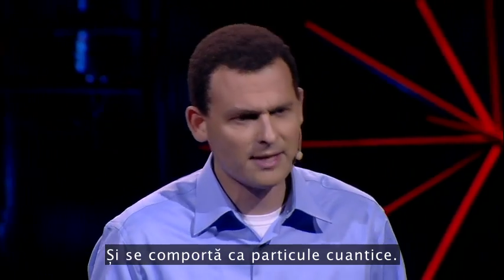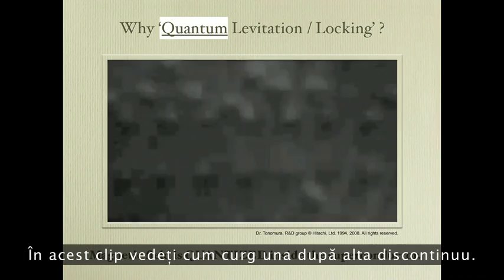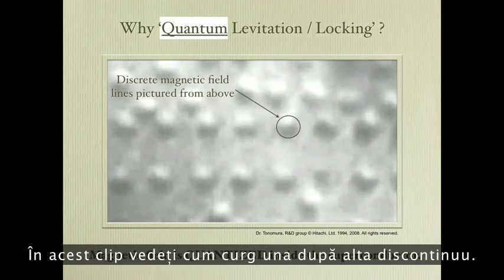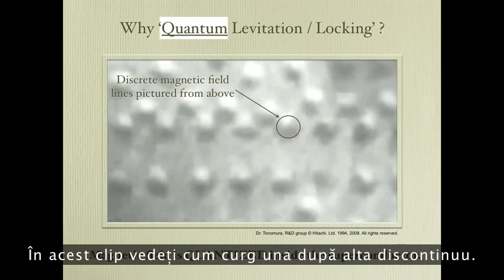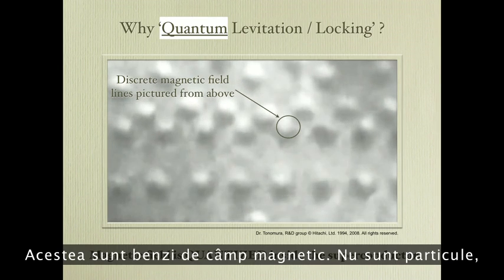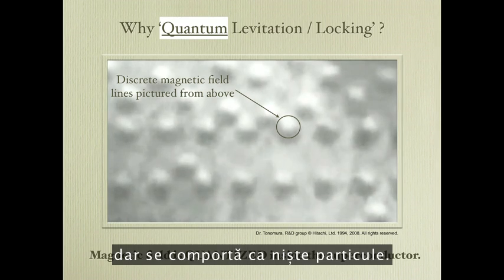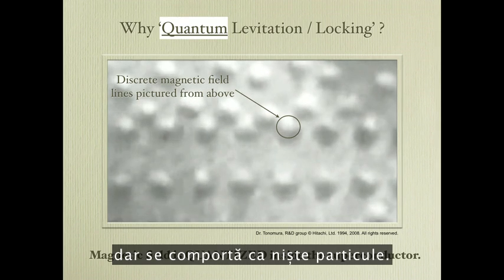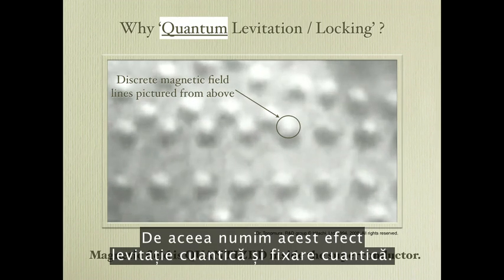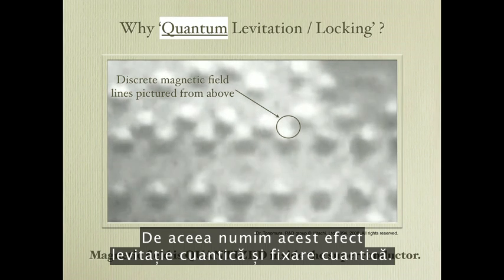It turns out that they behave like quantum particles. In this movie here, you can see how they flow one by one, discreetly. These are strands of magnetic field — they are not particles, but they behave like particles. This is why we call this effect quantum levitation and quantum locking.